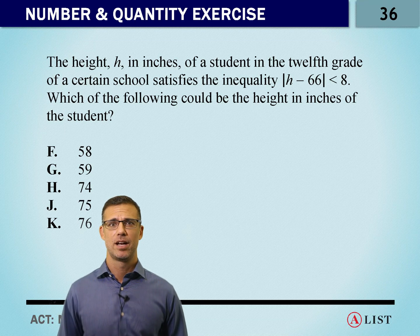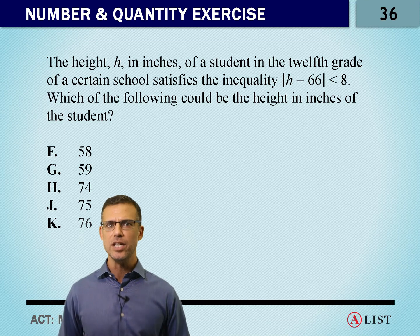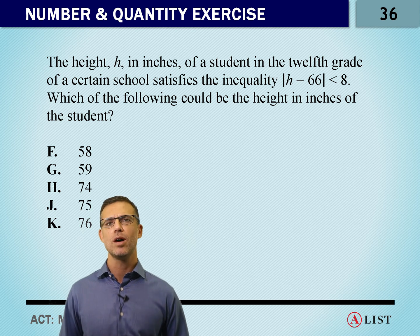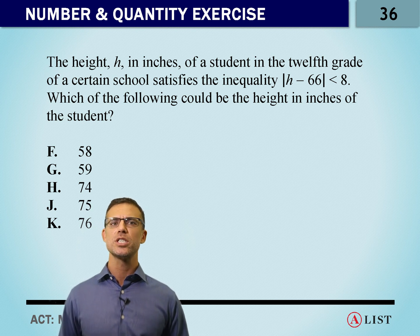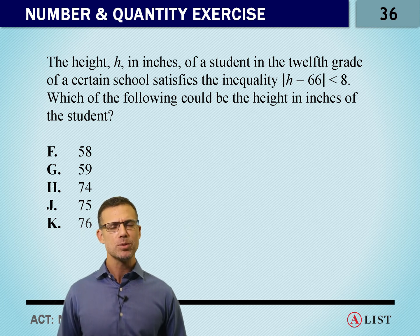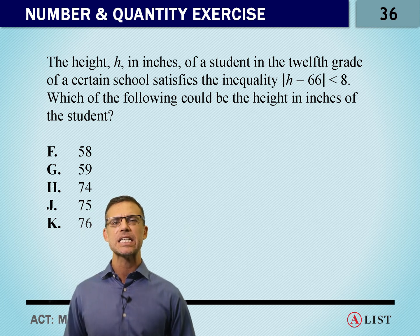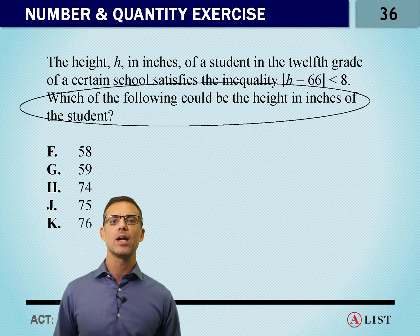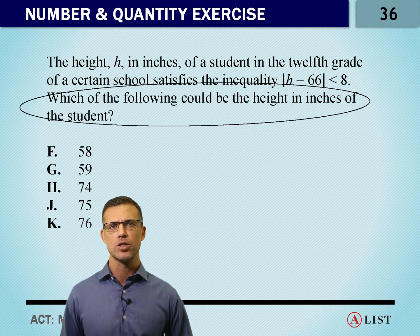Number 36, the height h in inches of a student in the 12th grade of a certain school satisfies an inequality. We see an absolute value here. Absolute value of h minus 66 is less than 8. Which of the following could be the height in inches of the student?